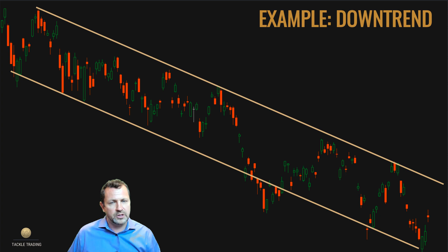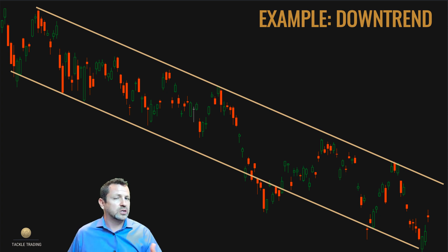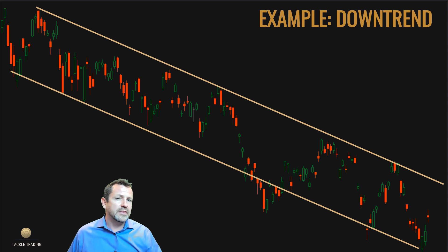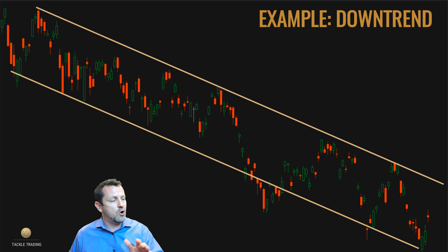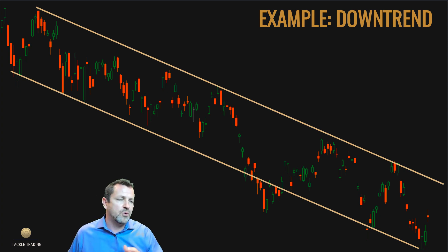Trend lines are primarily used for: one, identifying the trends; two, identifying trade setups and trading opportunities — we look to buy at the bottom of trend lines and at the top of trend lines we look to sell. And the last thing we use trend lines for is targeting — identifying how far we think the stock might go by forecasting out the top or bottom of the channel, giving us an idea of how far price might go according to the past trend.